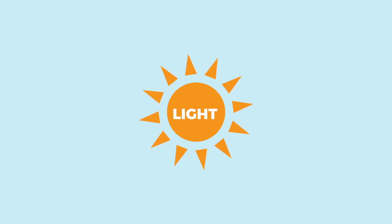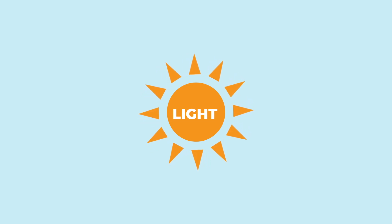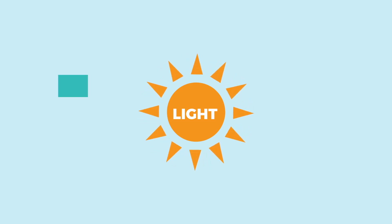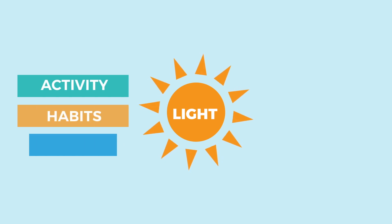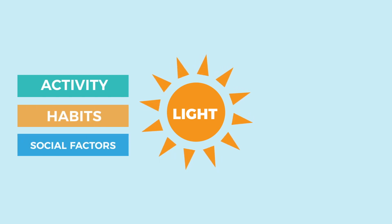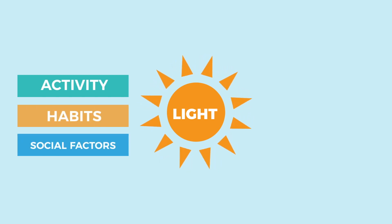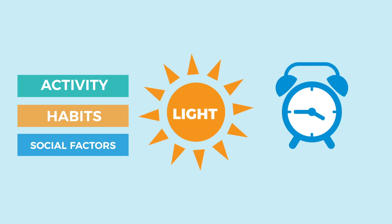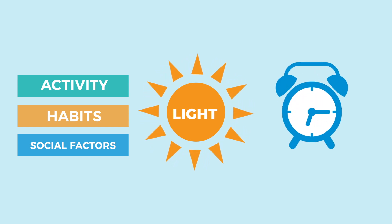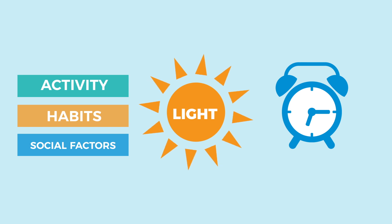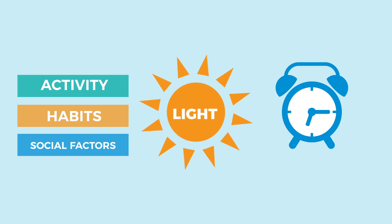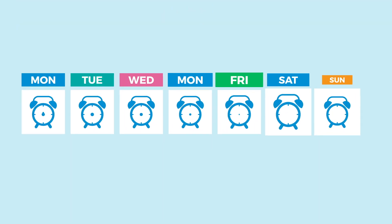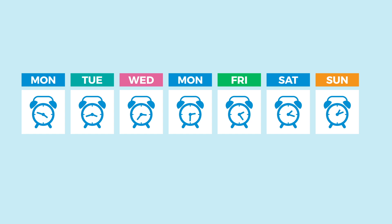But it's not just biology that affects our circadian rhythm. Activities, habits, and social factors also affect it. The time we get out of bed is the most important habit for setting your daily rhythm. We make it easy and predictable for our circadian rhythm if we get up at the same time every day throughout the week. We'll return to that point later on.